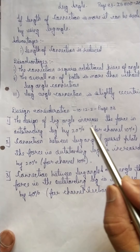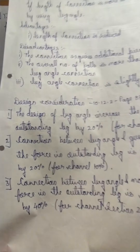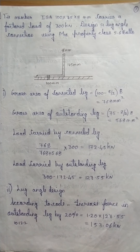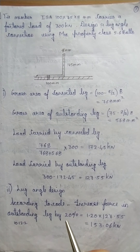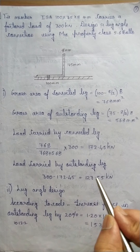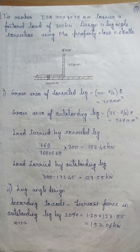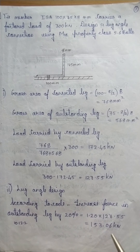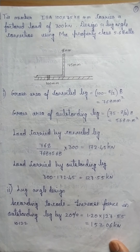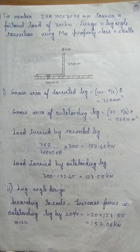The first design rule says to increase the force in the outstanding leg by 20 percent. So we increase it accordingly: 1.2 × 127.55, giving the increased force in the outstanding leg. Next, we have to find out the connections between the members, having determined the force in the outstanding leg.